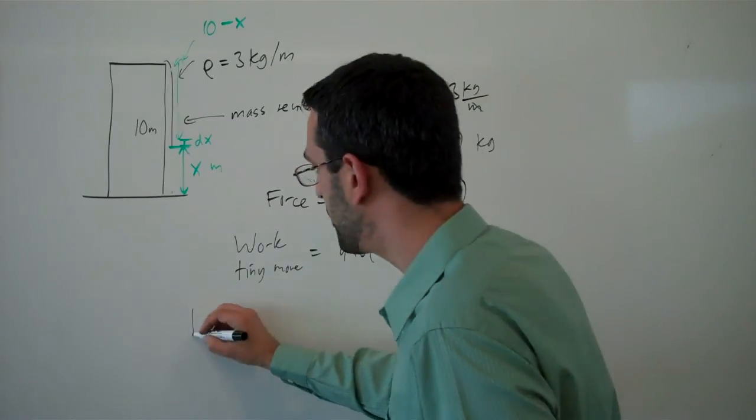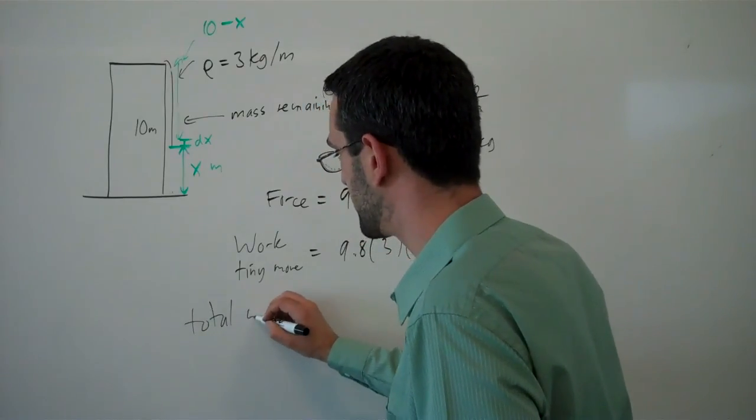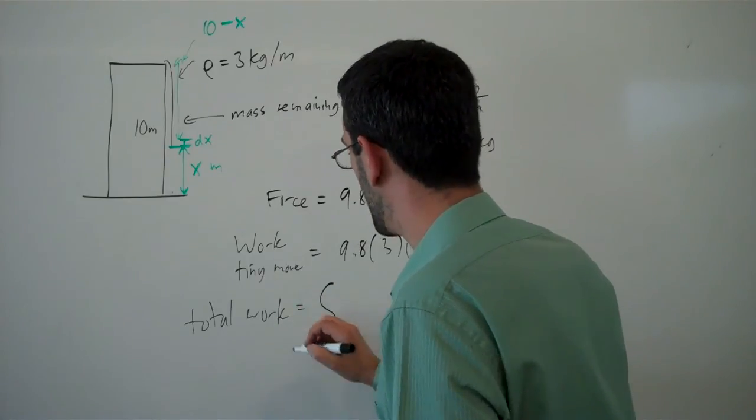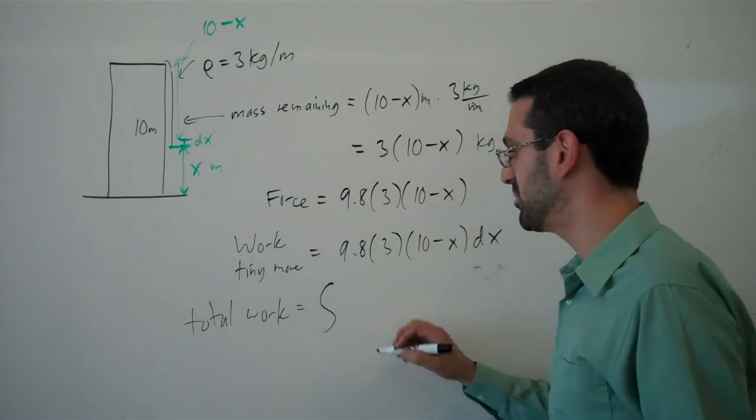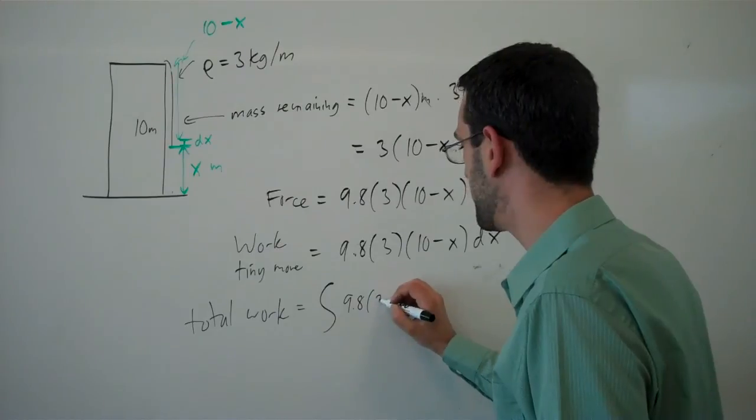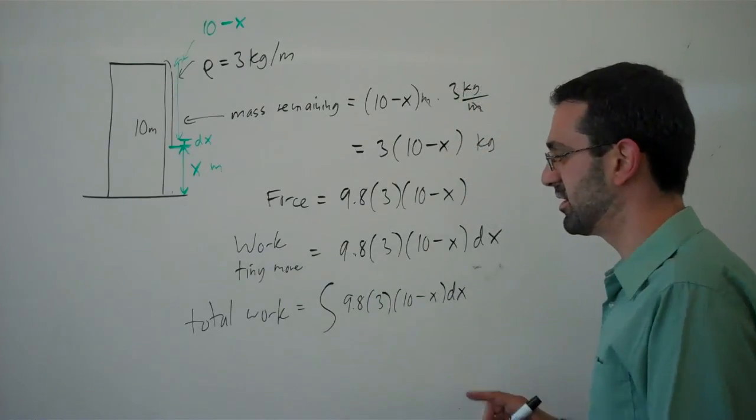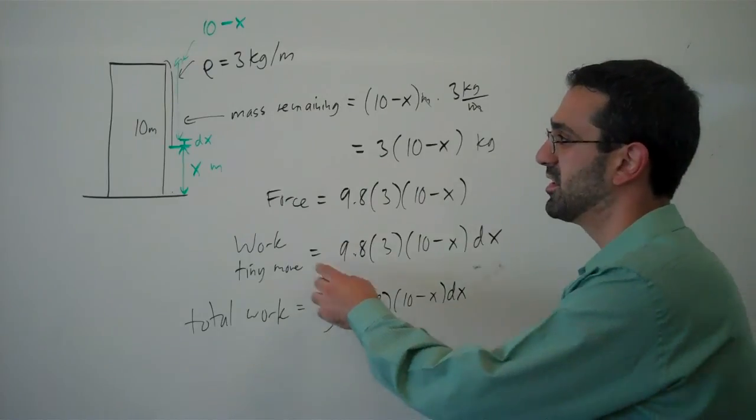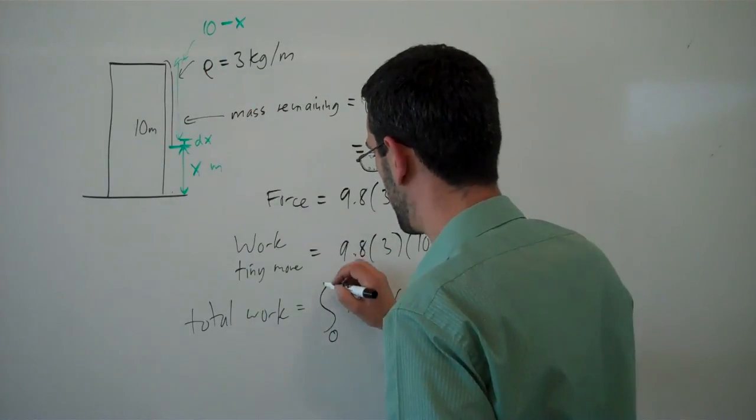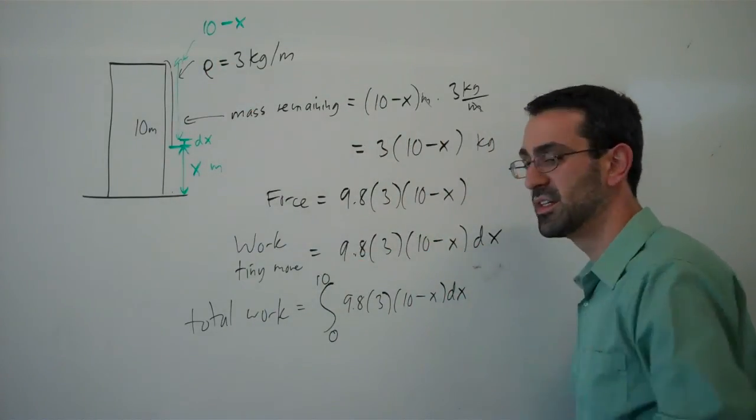And then the total work in lifting the chain will be the integral because now we're going to add up all those tiny little moves. So we're going to add up that work for all little moves from the bottom to the top. So integrating from 0 to 10.